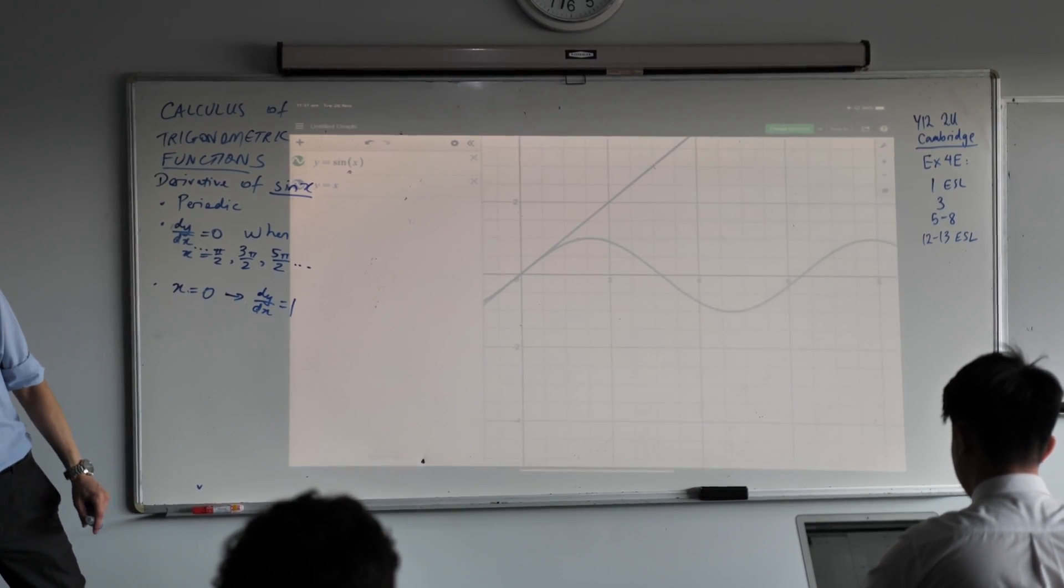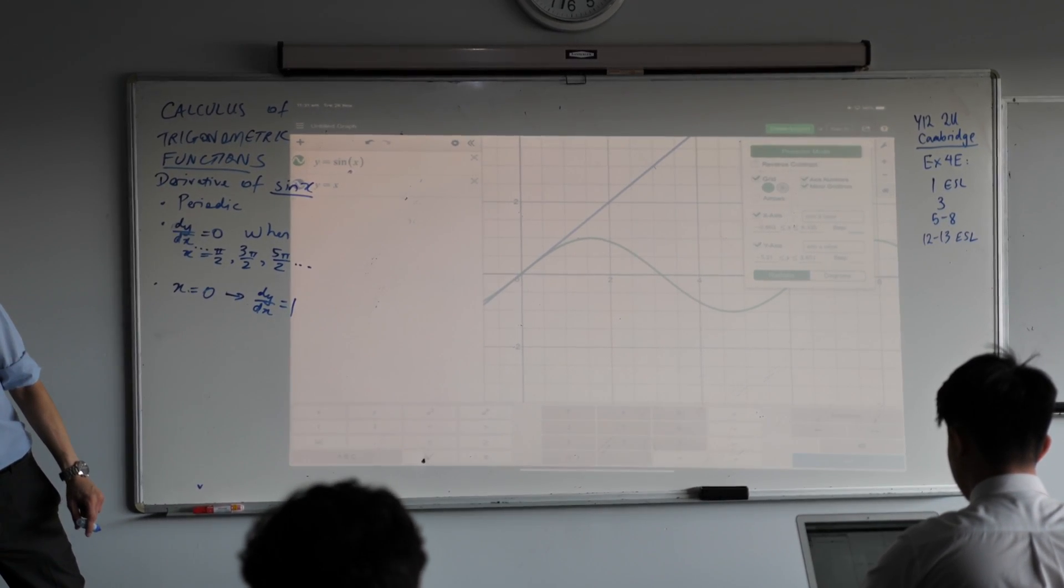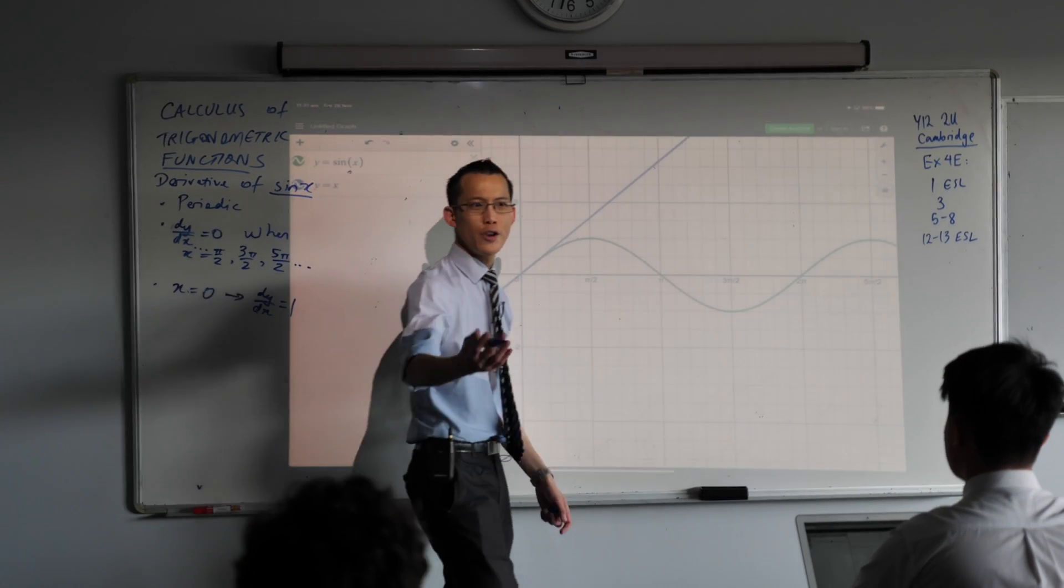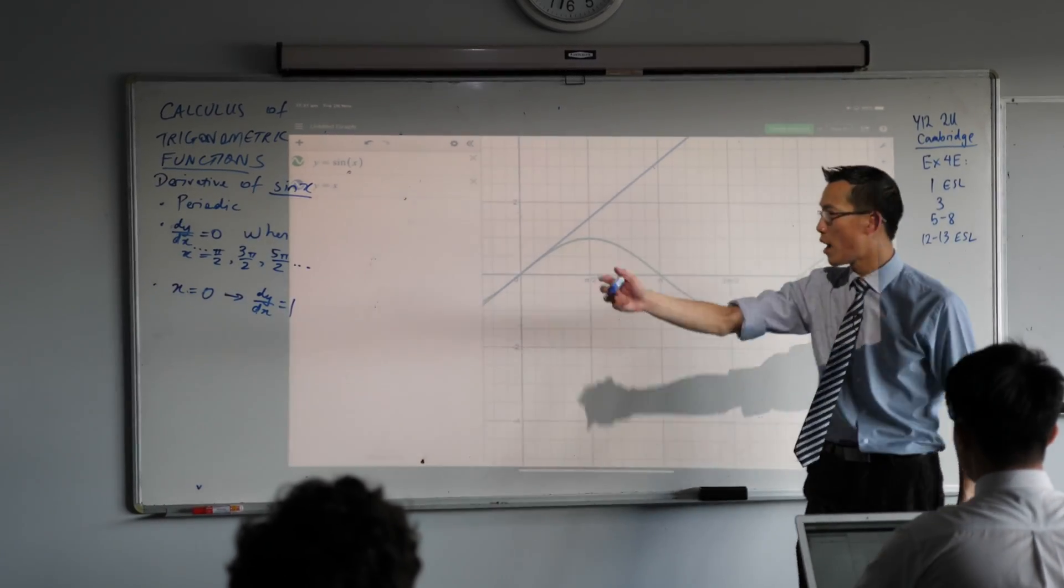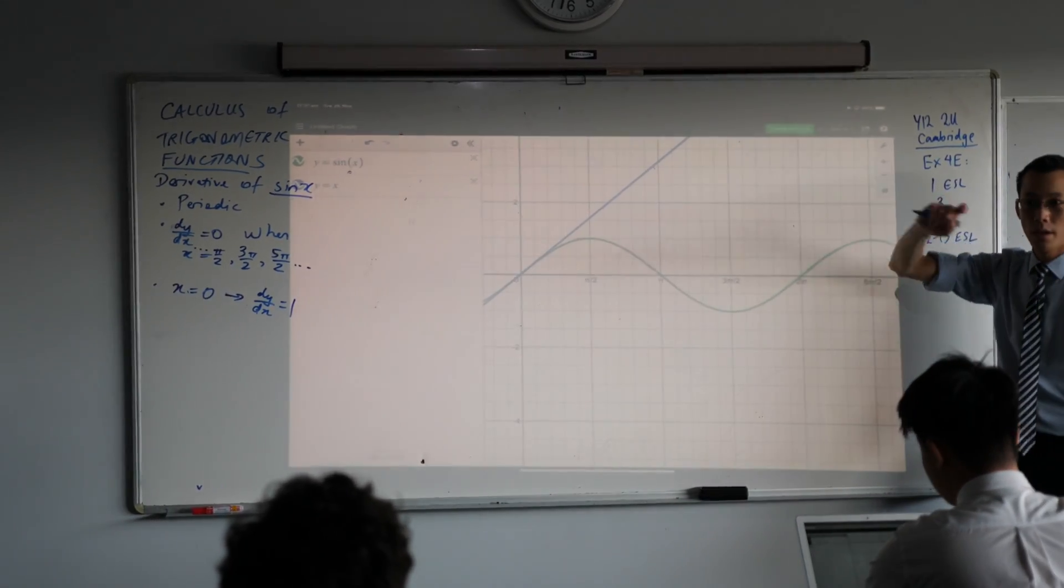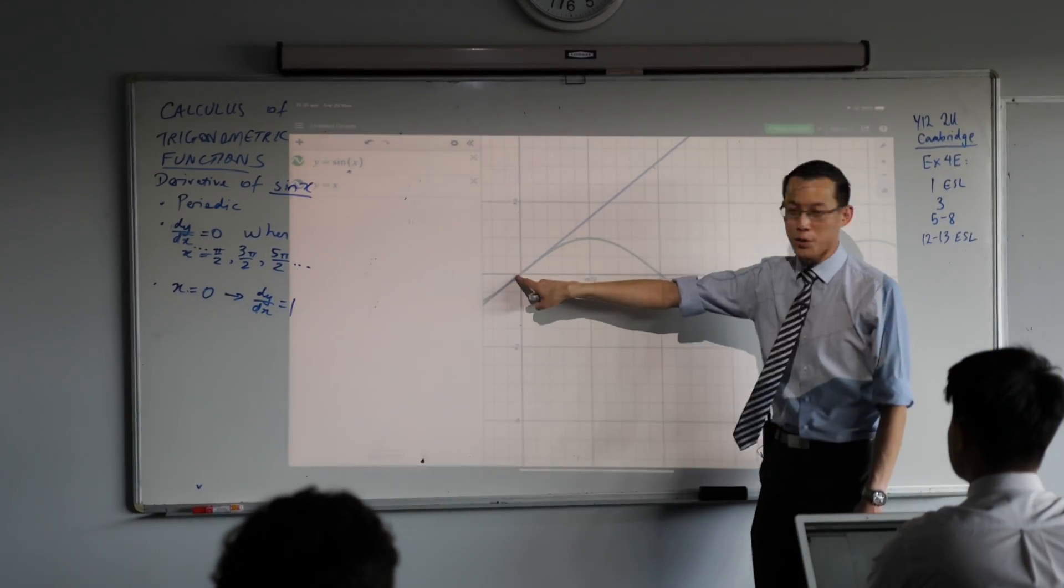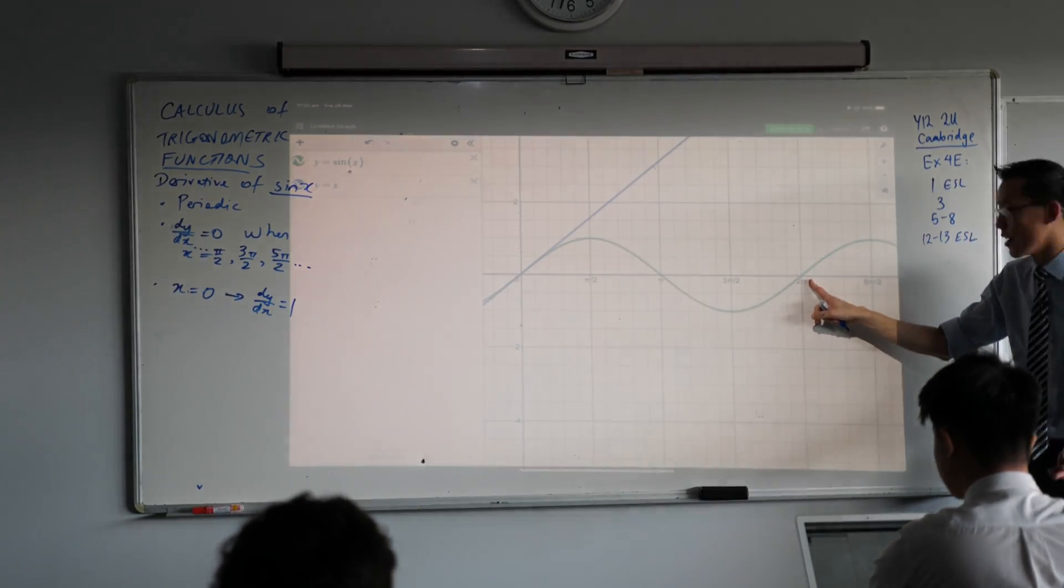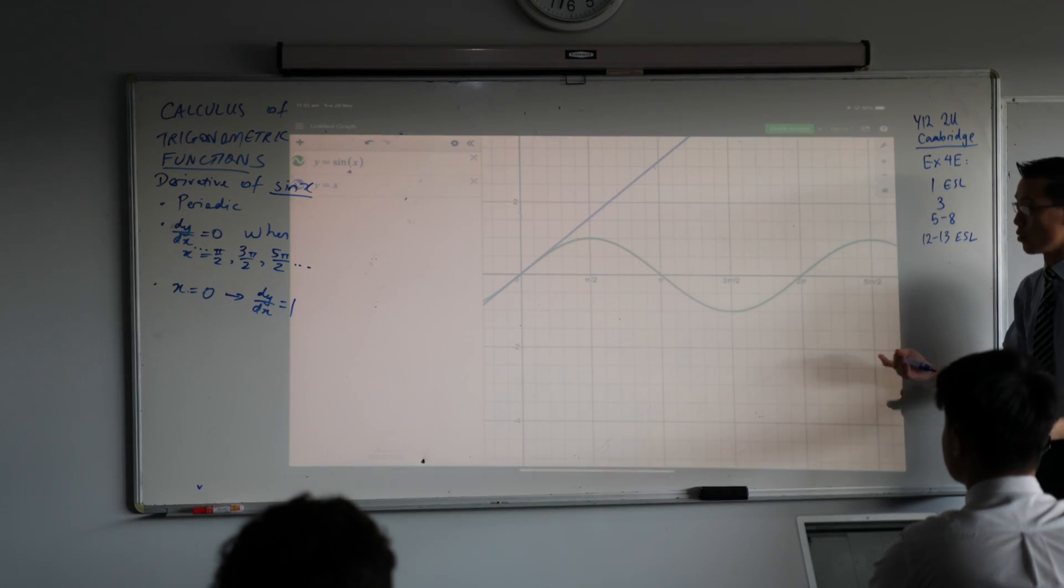Tell me another spot where the derivative will be one. Let me just put this back in. Tell me another spot. Two pi. Two pi should be exactly the spot we should expect. Why? Have a look at our list of clues. Periodic. It's periodic, right? So if it was a gradient of one here, it should be a gradient of one. Two pi radians later, and another two pi, and so on. Okay.